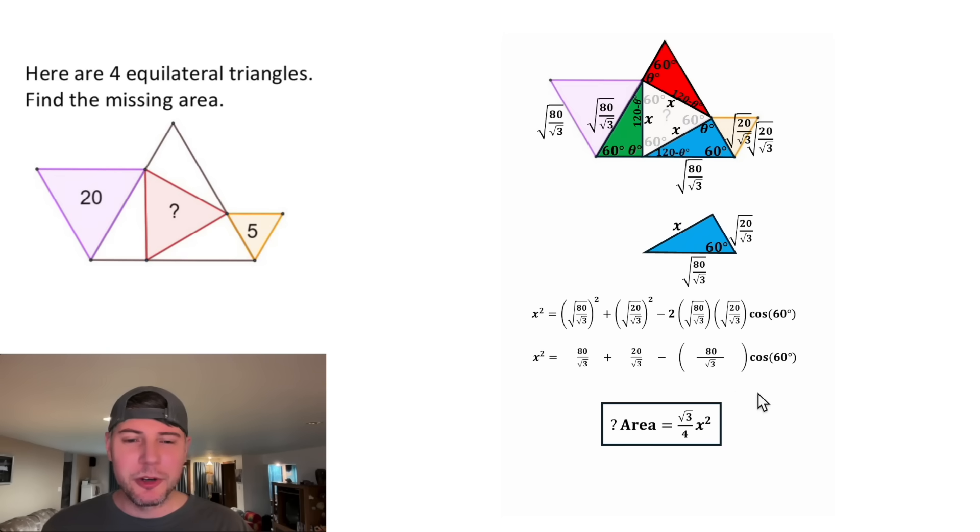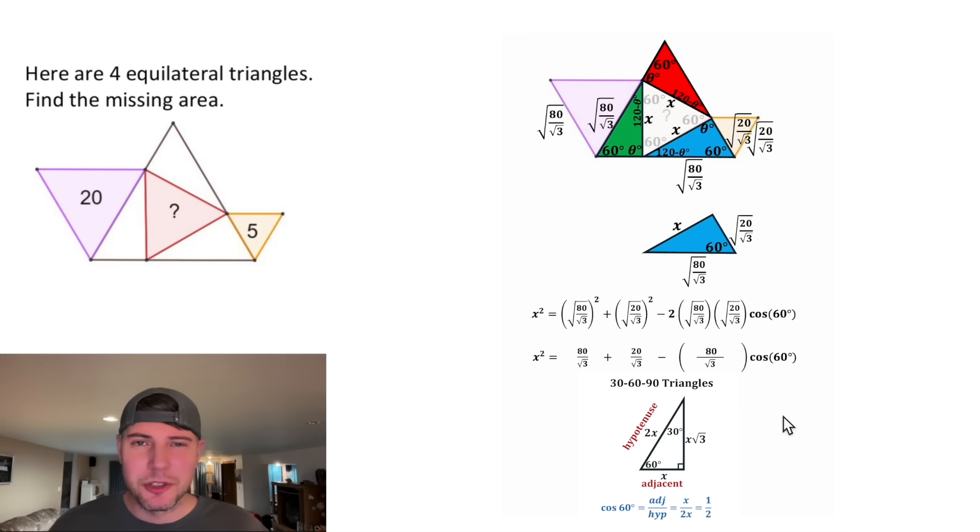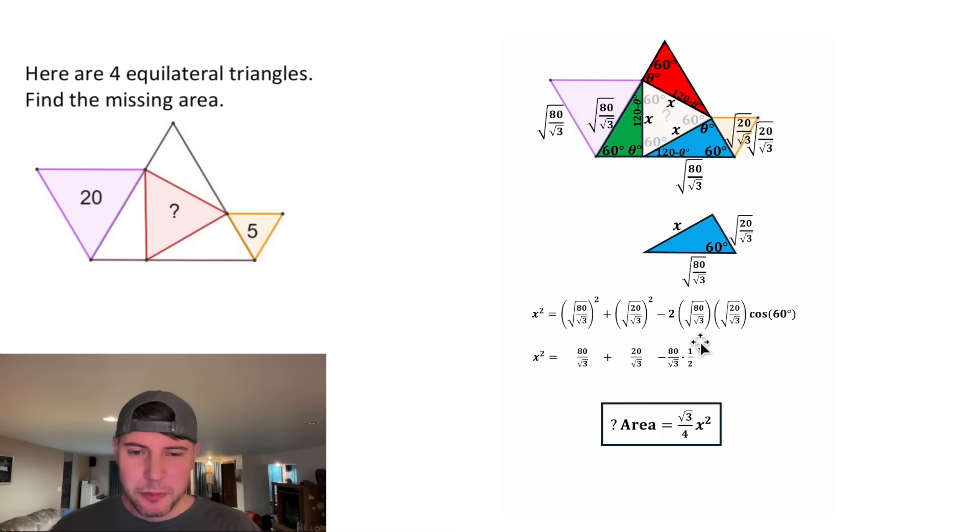Then we can do the cosine of 60 degrees. If we look at a 30-60-90 triangle, the cosine is the adjacent over hypotenuse. That'll give us x over 2x, which simplifies to 1 half. So cosine of 60 is equal to 1 half. From here, we can multiply the 80 times 1 half to give us 40.